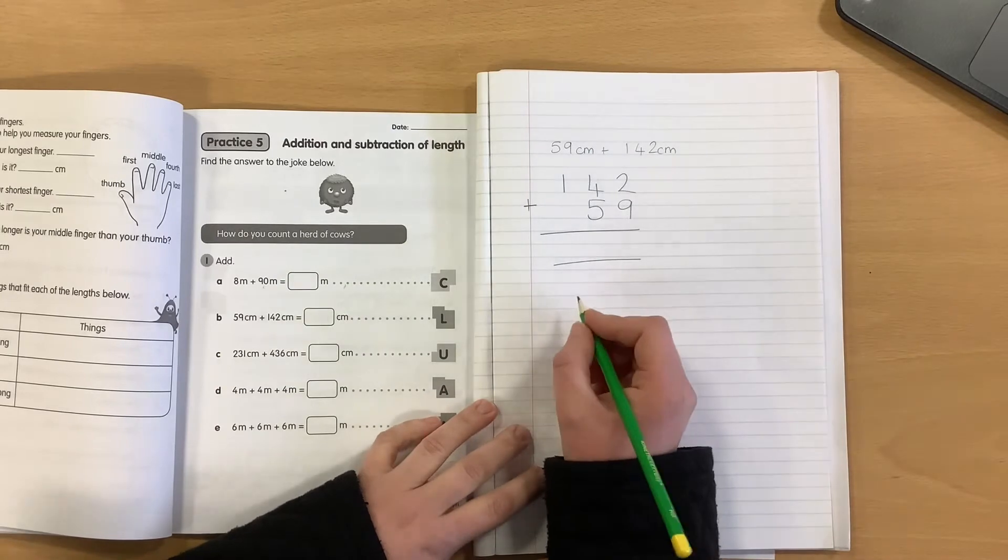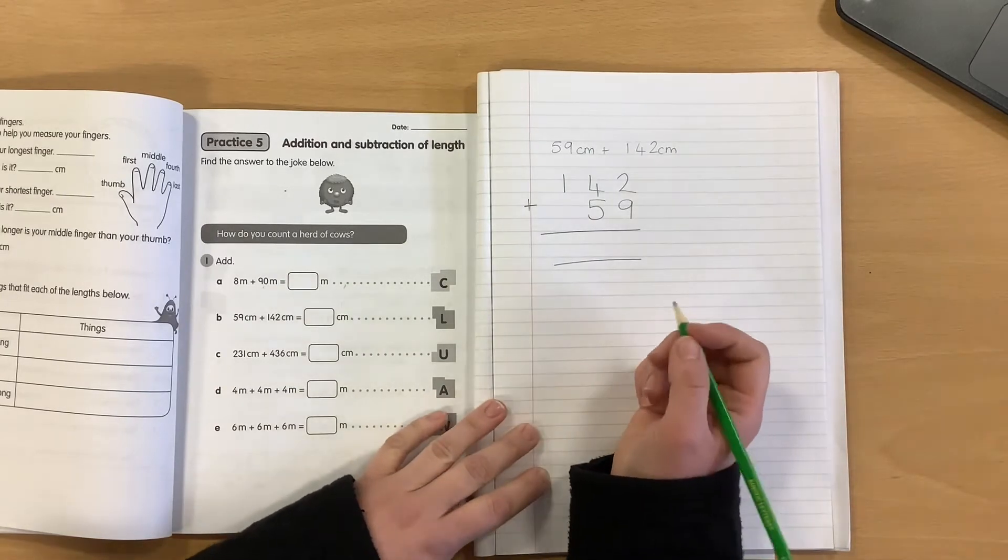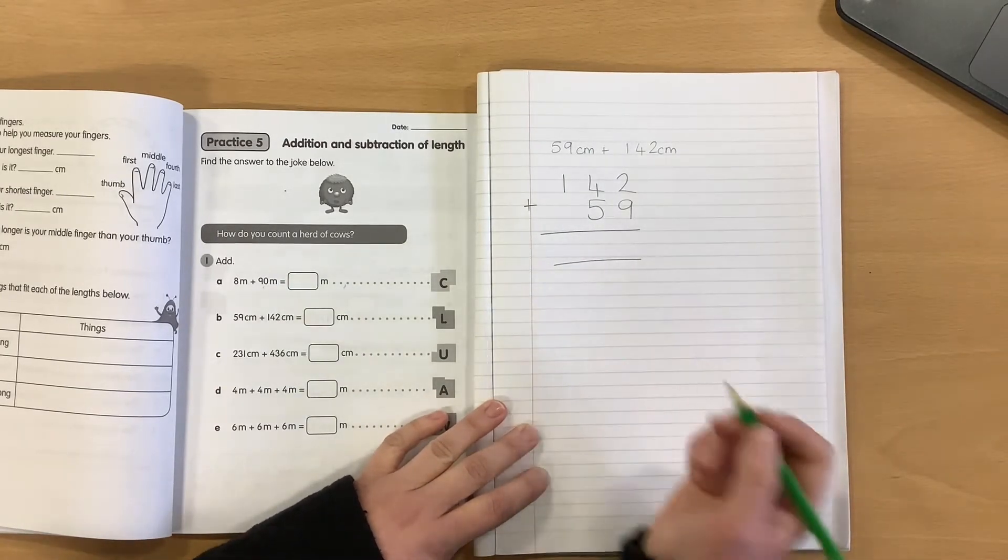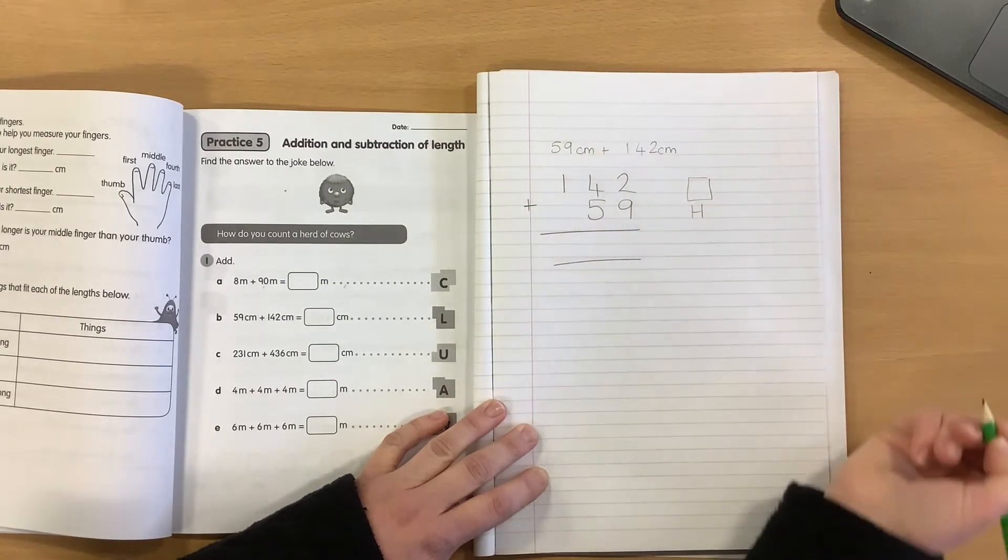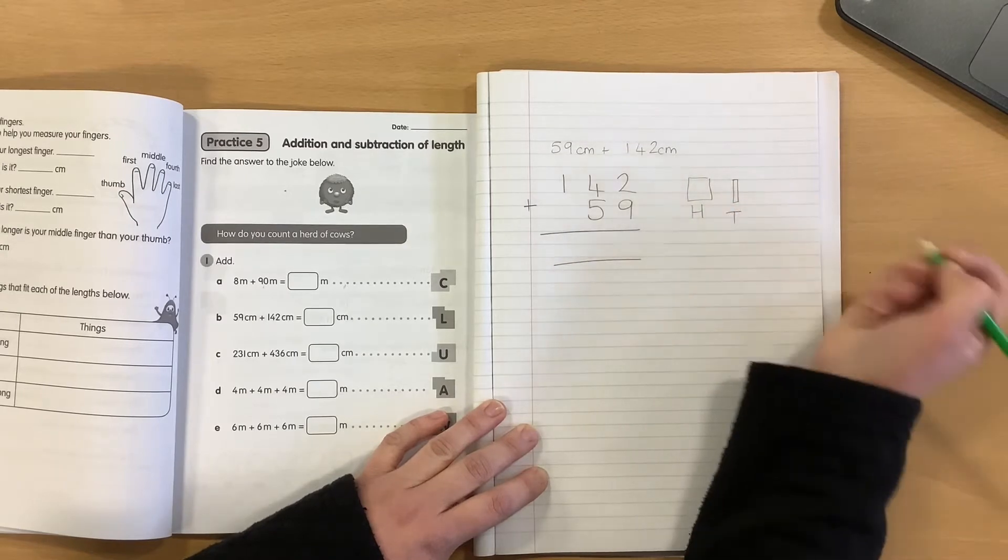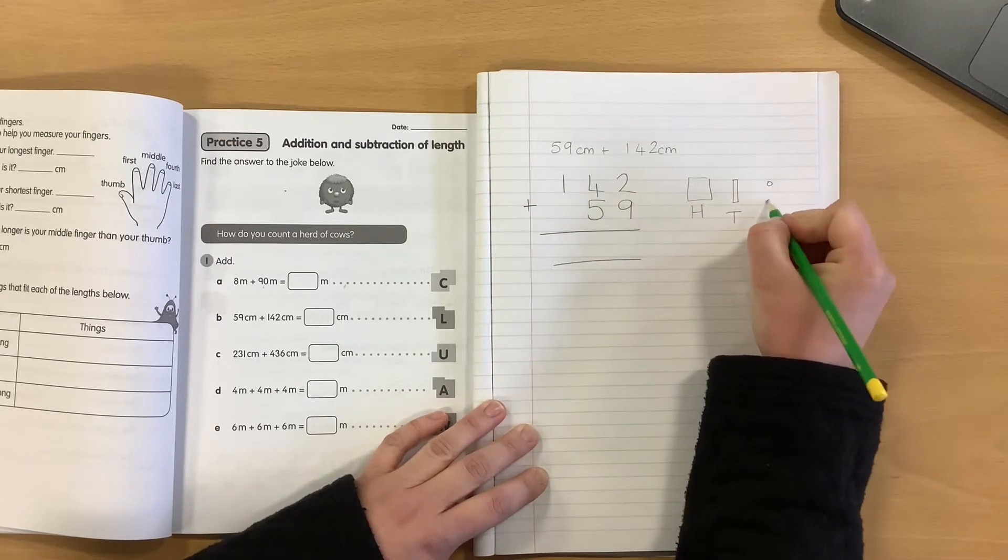Now, if this is tricky, we can always use our pictorial methods to support us. So, I'm going to draw my number. I'm going to use a large square to represent any hundreds, a stick to represent any tens, and a small little circle for my ones.